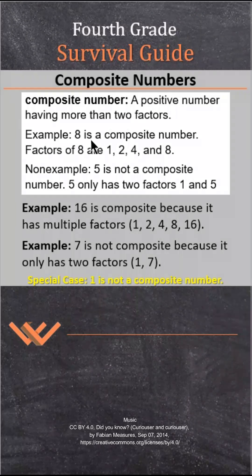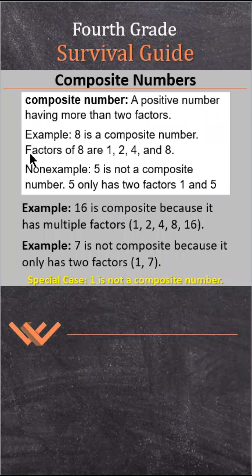For example, 8 is a composite number because its factors are 1, 2, 4, and 8.